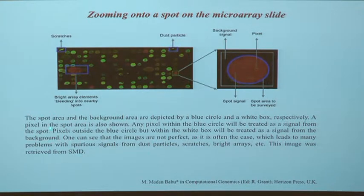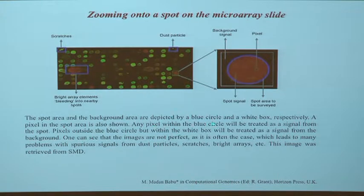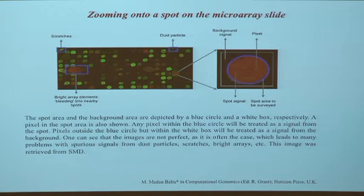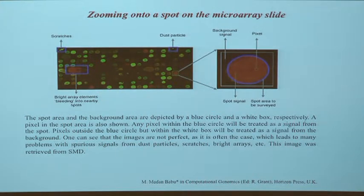In image analysis, the spot area and background area are depicted, and each pixel within the circle is treated as signal from the spot. You're measuring signal intensity - how much signal is there - and in order to get an intensity indicative of your biological sample rather than background, several steps must be carried out. The first is background correction: you compensate for background everywhere by taking a large number of spots, taking a median, and looking at distributions of intensities. These images are not perfect, which leads to problems with spurious signals - could be dust, scratches, or bright artifacts.